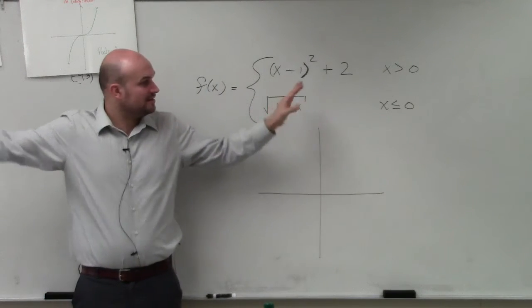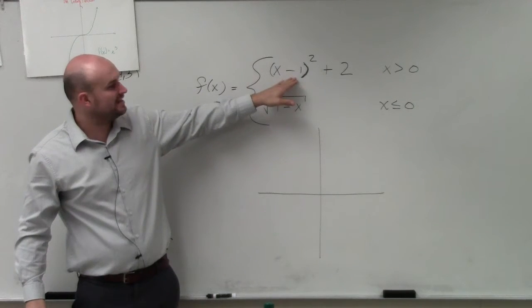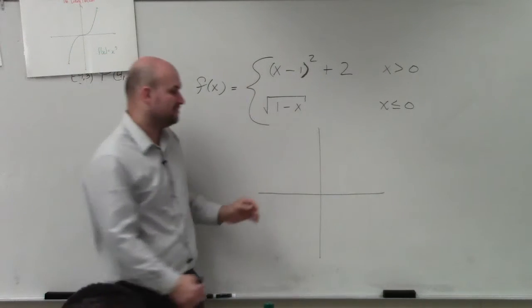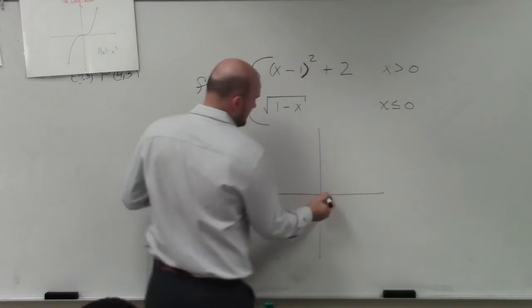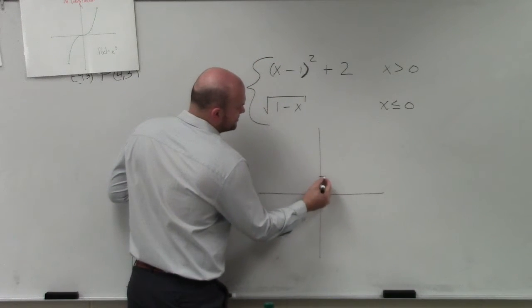Oh, perfect. Right? You identify the transformations. You're being shifted to the right one and then up two. So typically, my parent function crosses at 0, 0. Now I'm crossing at 1, up 2.